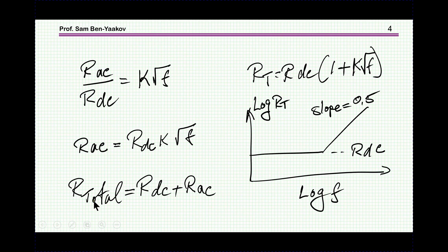Now, the total resistance will be some of these, and if I sum it up, I'll find that I have an expression of this nature, which if I plot it in a log-log graph, I'll find here, this will be the RDC, and this is where the RAC becomes larger than the RDC, and here we're expecting a slope of 0.5 in a log-log graph.